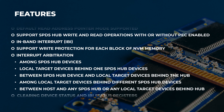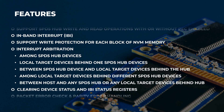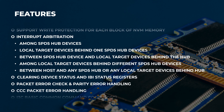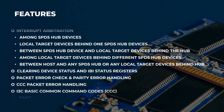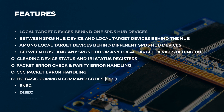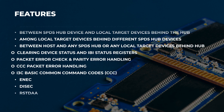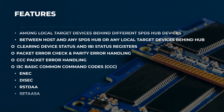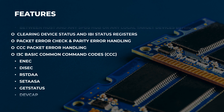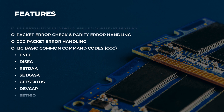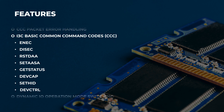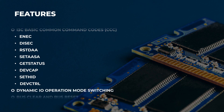Interrupt arbitration is supported for local target devices behind one SPD5 hub device, between SPD5 hub devices and local target devices behind the hub, among local target devices behind different SPD5 hub devices, and between the host and any SPD5 hub or local target devices behind the hub. Clearing device status and IBI status registers is supported.